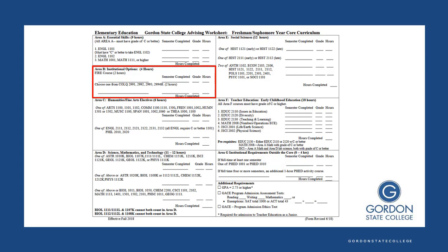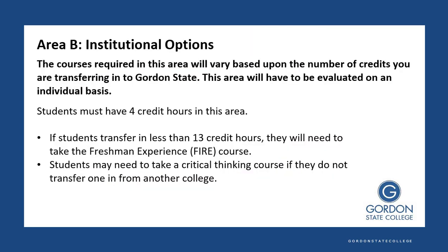Now let's look at Area B, which is Institutional Options. These differ from other colleges and are based upon the number of credits you are transferring into Gordon State — this has to be evaluated on an individual basis. You will need 4 credit hours in this area. If you are transferring in less than 13 credit hours, you will need to take our Freshman Experience course. You will also need to take a Critical Thinking course, which we call a Colloquium, if you have not taken one and transferred it in from another college.